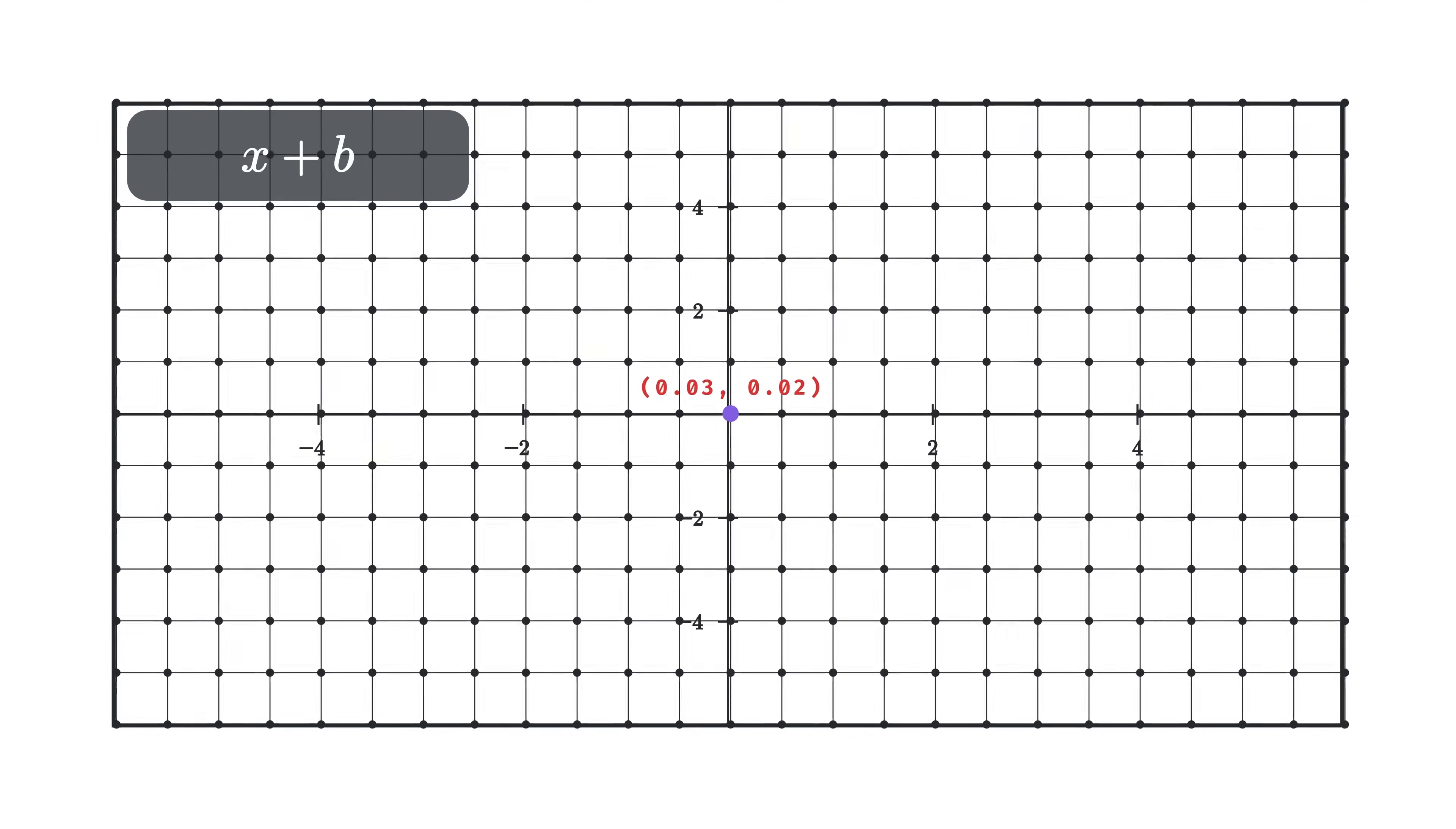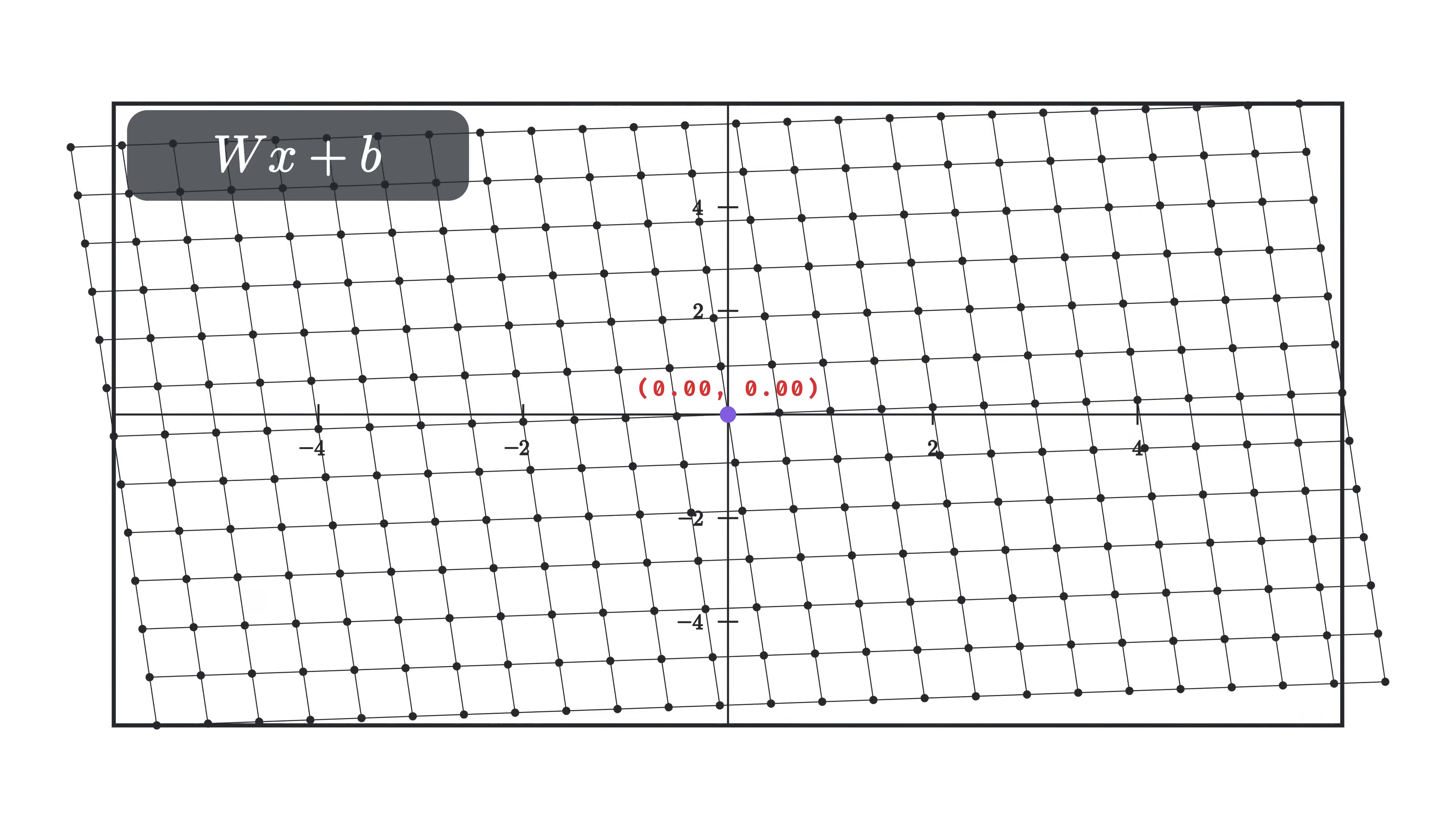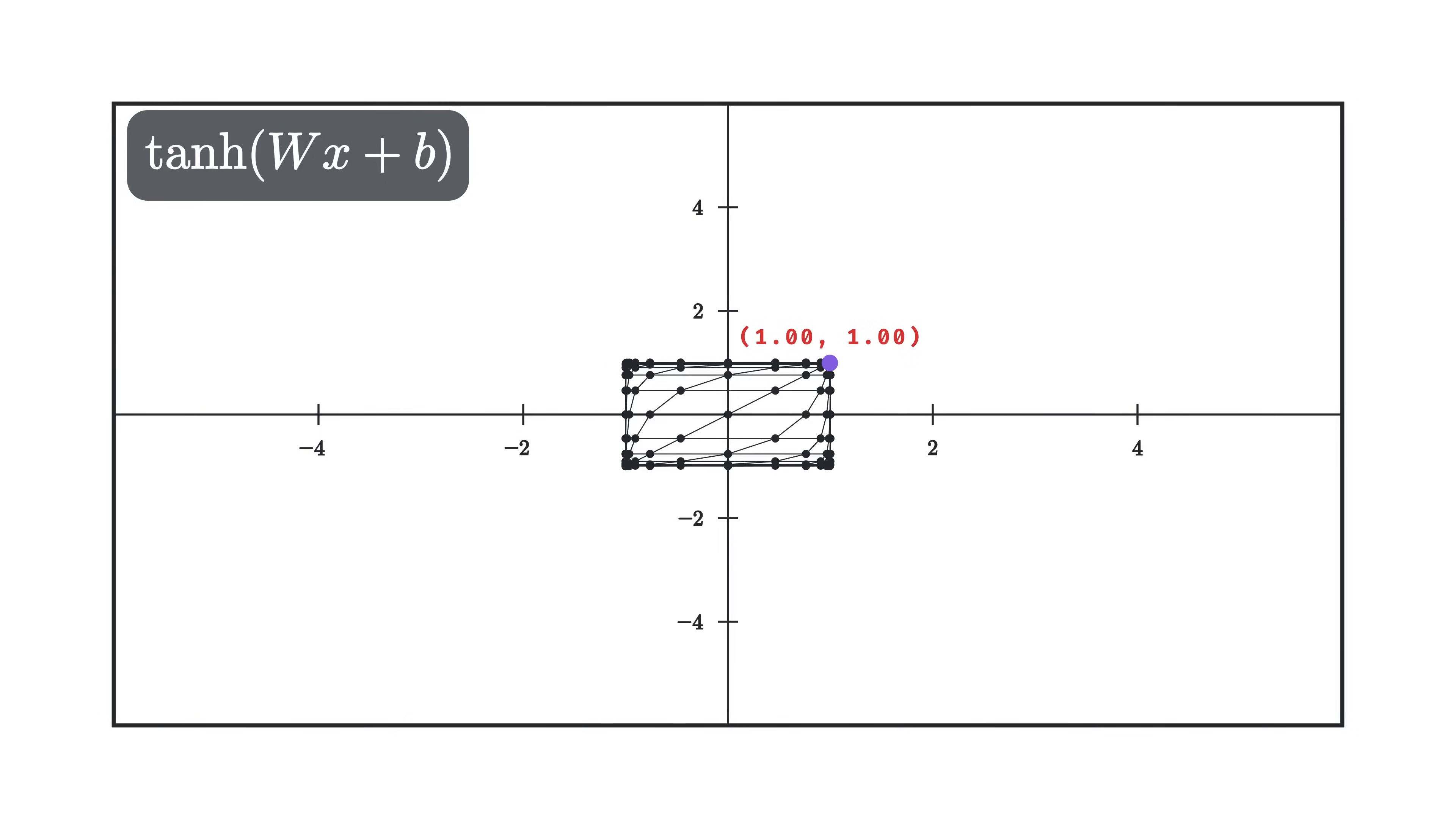In practice, we also add a constant we call the bias along with the weighted sum. This represents a translation in our space. Here's a linear transformation followed by a translation. Then we follow it by a tanh. Note that a linear transformation followed by a translation is called an affine transformation, which is what we'll call it from now on.